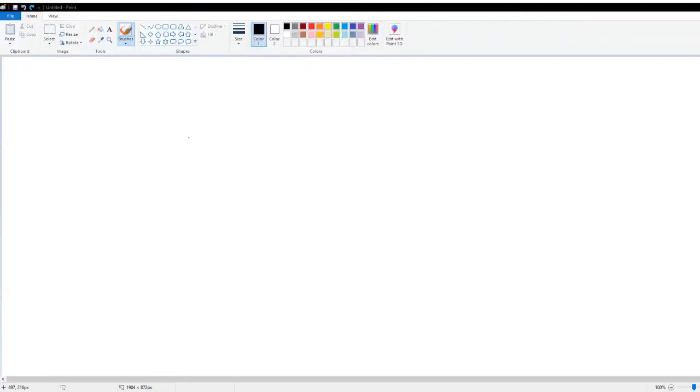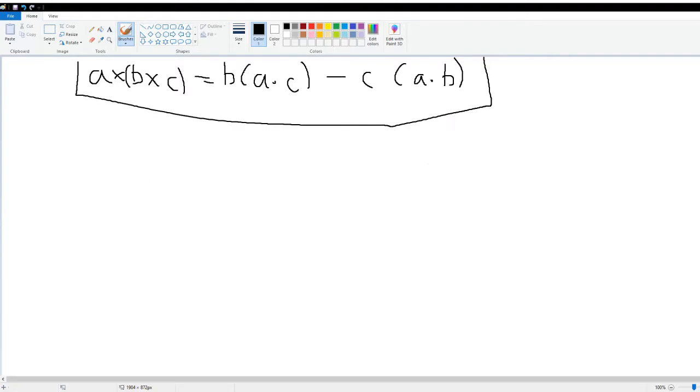I'm going to be taking a look at the triple vector proof using the Levi-Civita symbol. The proof is defined as a cross b cross c (with these ones in parentheses) is the same thing as b times a dot c minus c times a dot b, and of course these are all vectors.